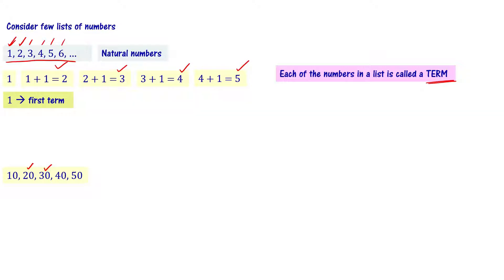For the second list: 10 is the first term, 20 is the second term, 30 is the third term, 40 is the fourth term, 50 is the fifth term. In the first list, the first term is 1. The next term is 1 plus 1, then 2 plus 1, then 3 plus 1, then 4 plus 1.